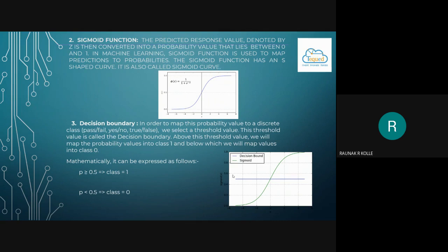Decision boundary. In order to map this probability value to its discrete class - pass or fail, yes or no, true or false - in our case, it would be positive review, negative review or non-partisan review, we select a threshold value called the decision boundary. Above this threshold value, we will map the probability values into class 1 and below which we will map the values into class 0. For our model, we will have class of minus 1 as well, indicating a negative class, that is a negative review.